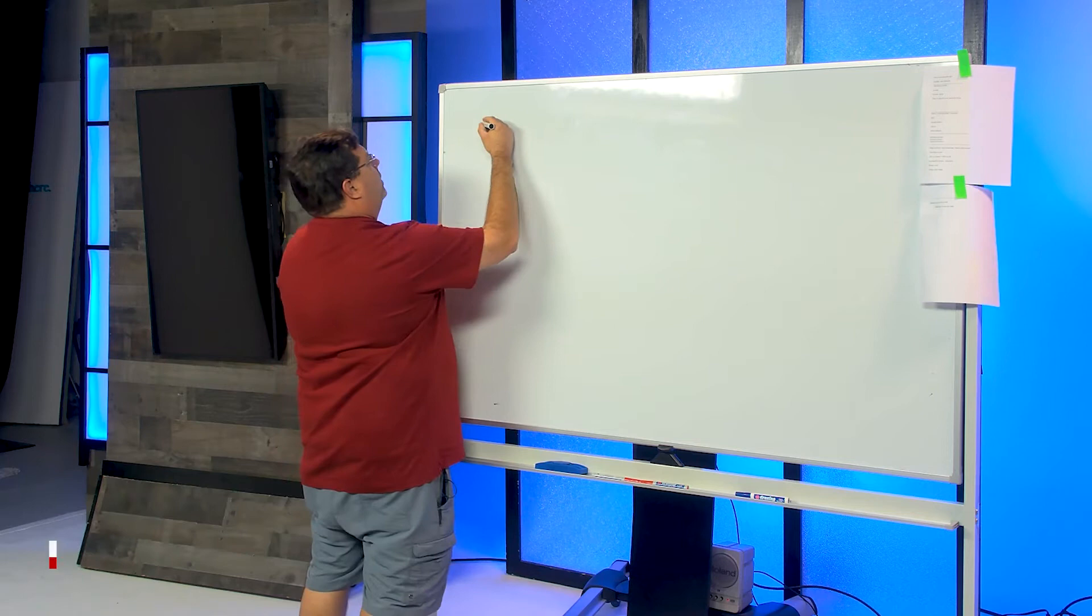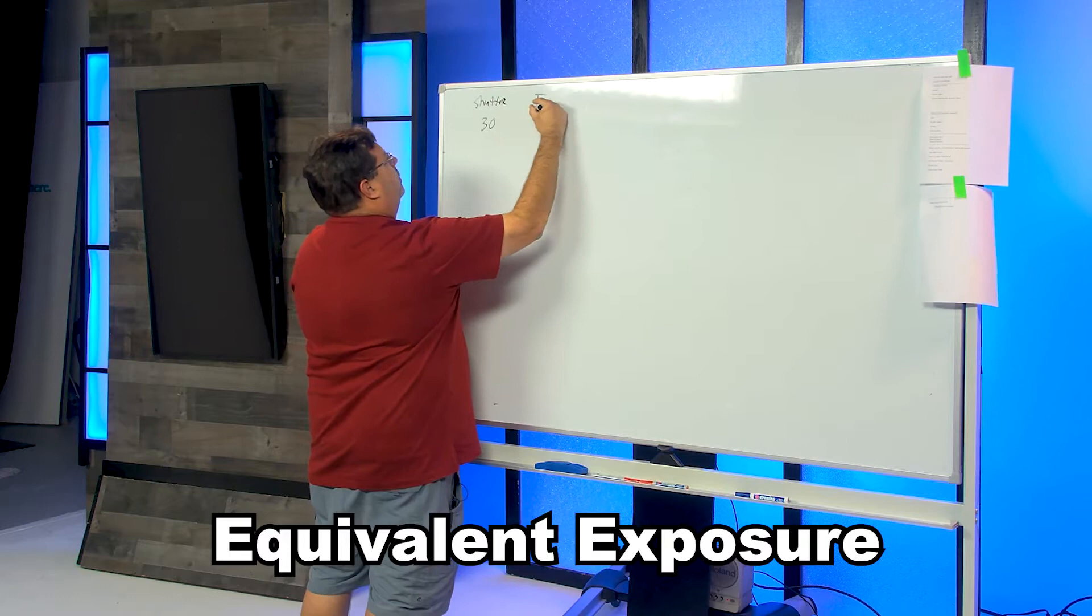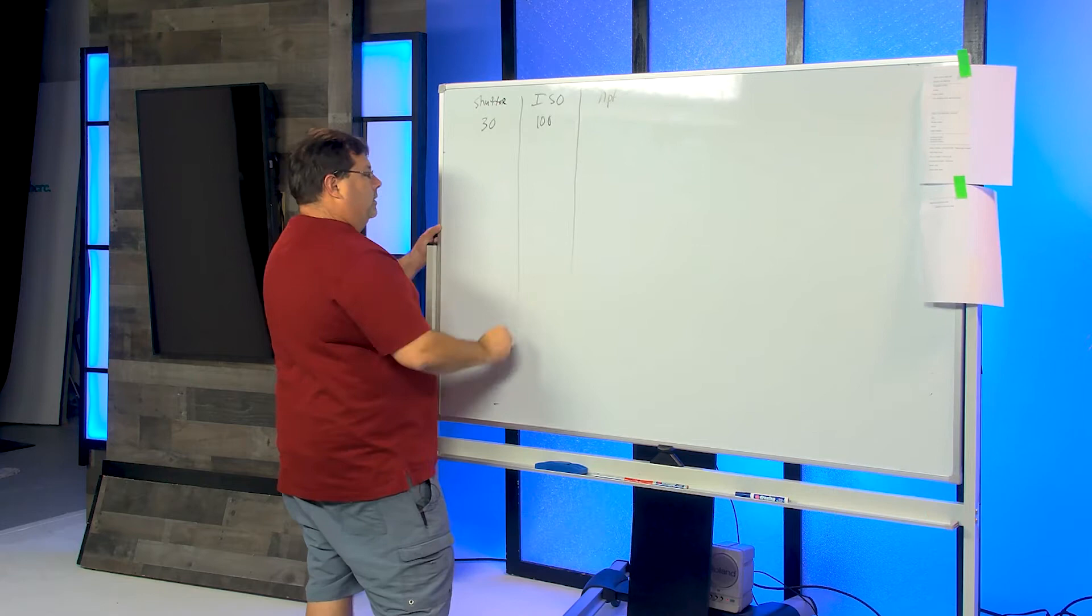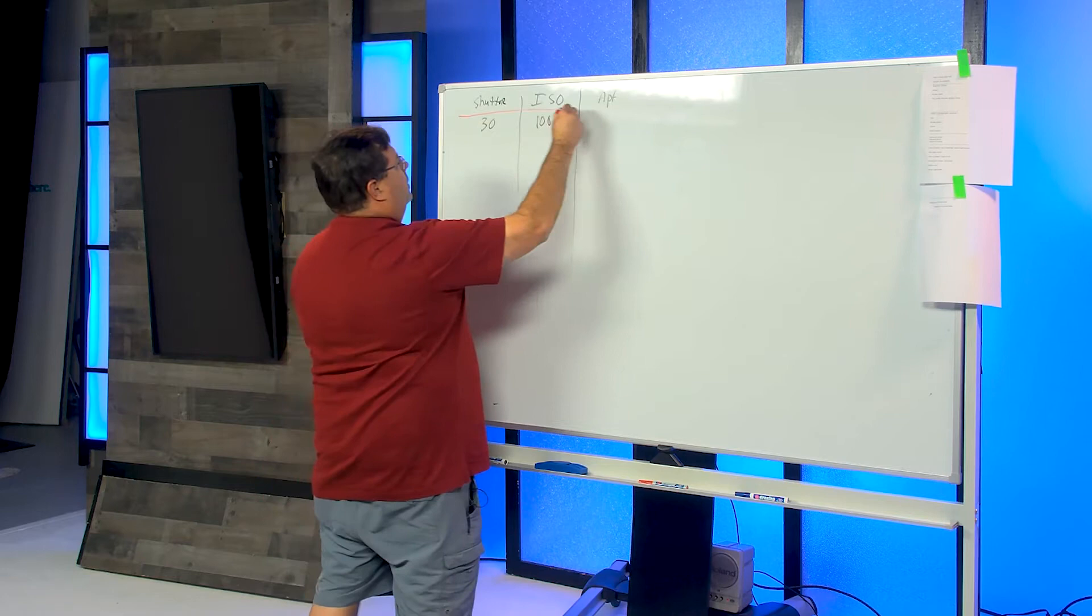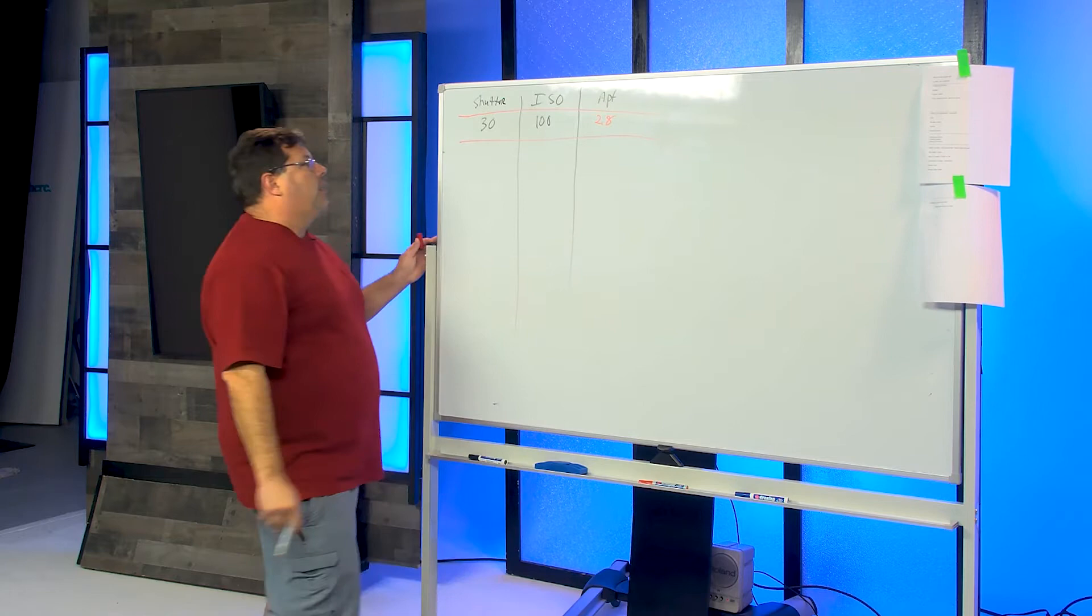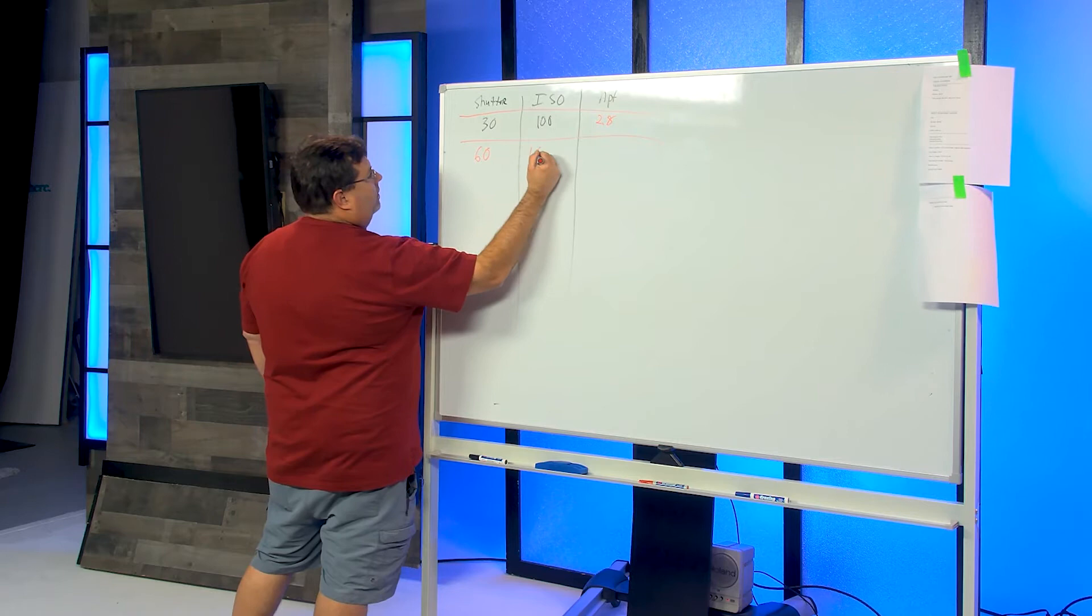Okay, strobe's coming out. Let's do the equivalent shutter speed. I love this idea. Let's start with 1/30th of a second shutter, ISO 100, and aperture. I'm gonna take my red dry erase marker and we'll do my aperture at f/2.8.